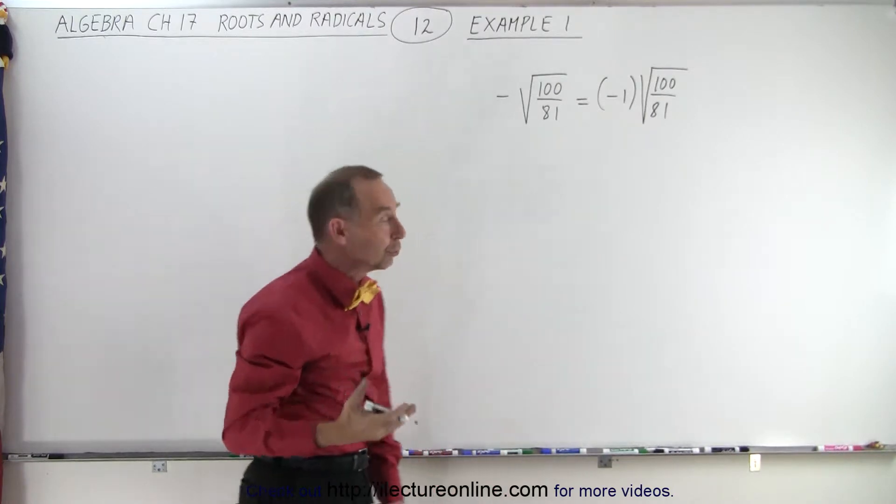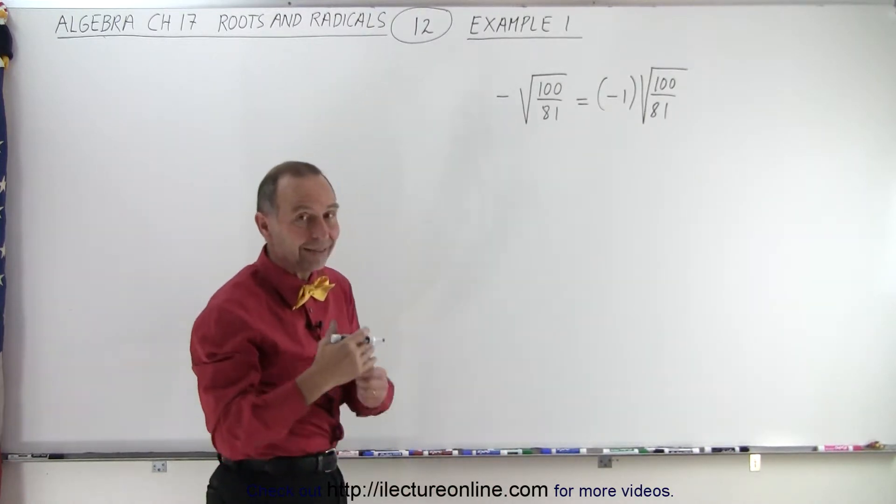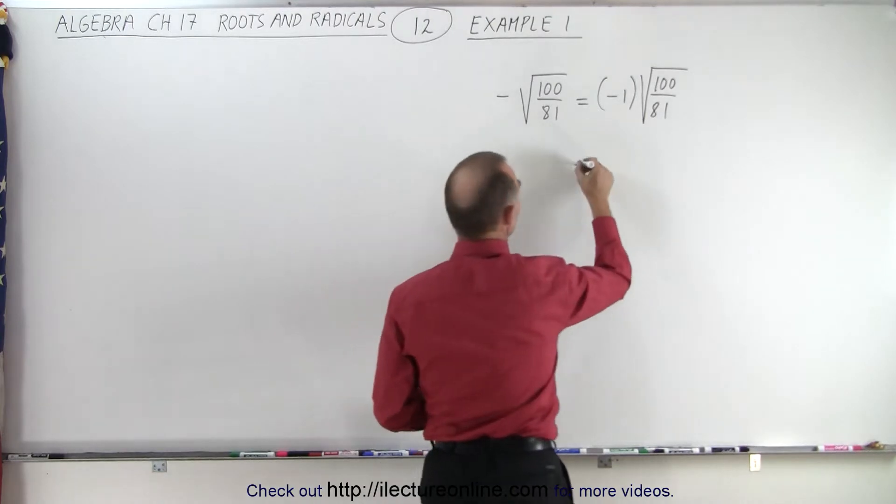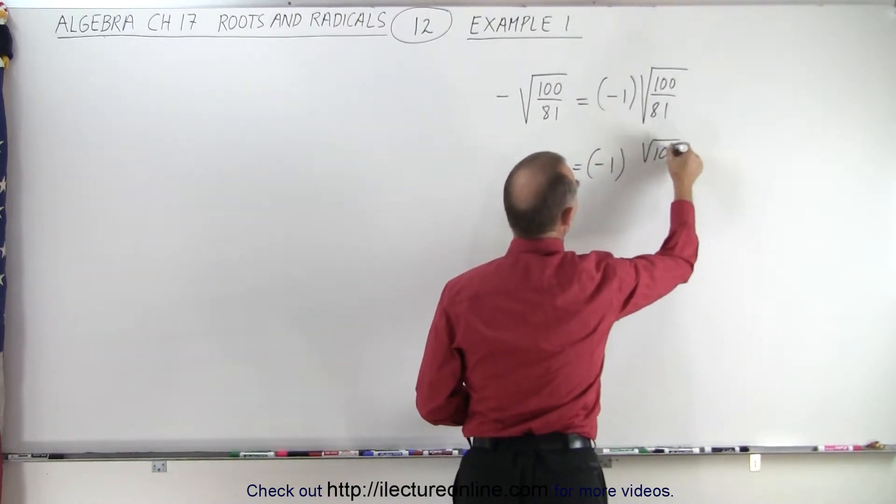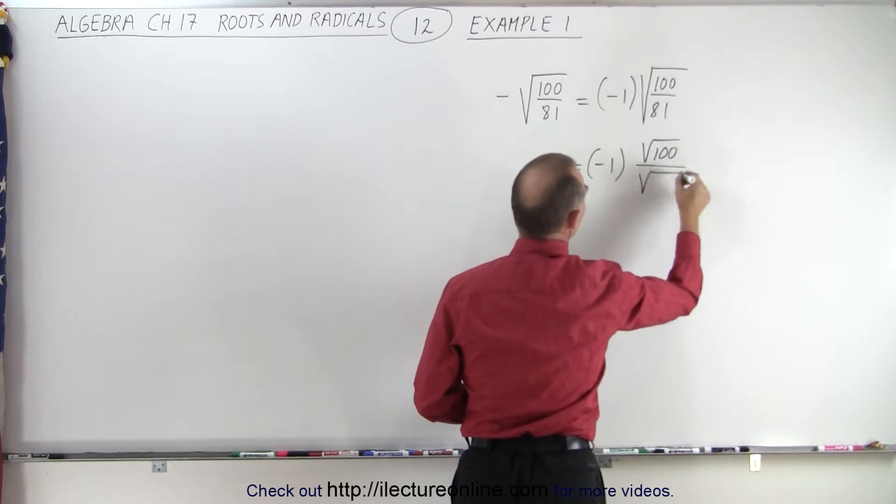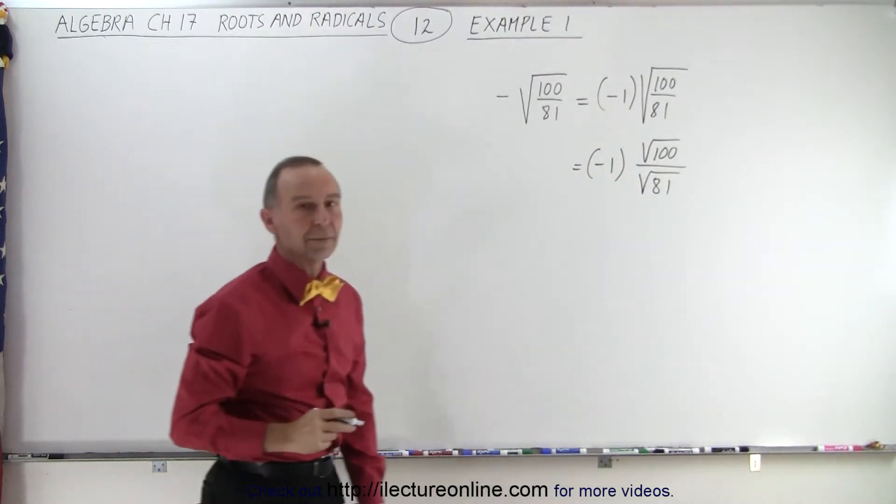When we have the square root of a fraction, we can then separate the numerator from the denominator. This can be written as negative 1 times the square root of 100 in the numerator divided by the square root of 81 in the denominator.